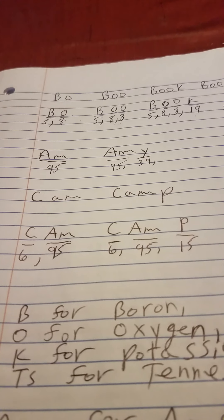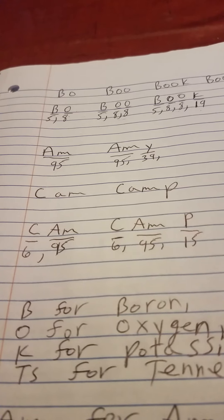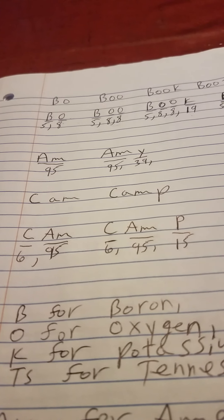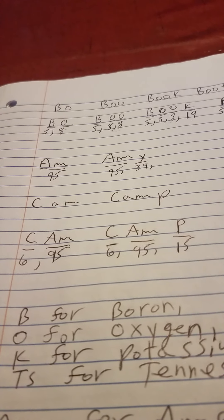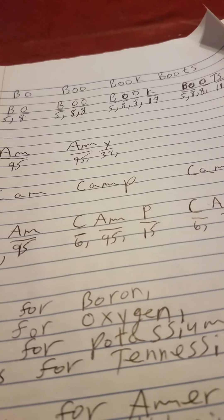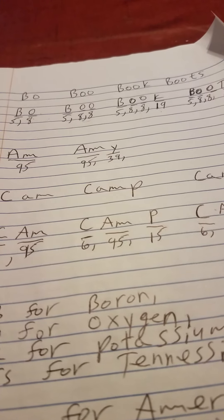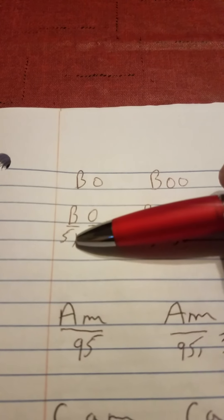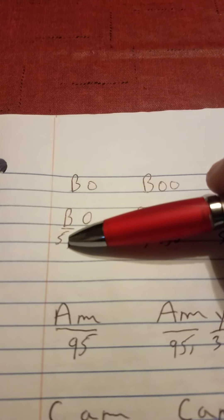I'm using what is called adding letters and building words to construct chemical symbols and atomic numbers. For example, you got B-O, capital B is for boron, capital B-O-R-O-N.